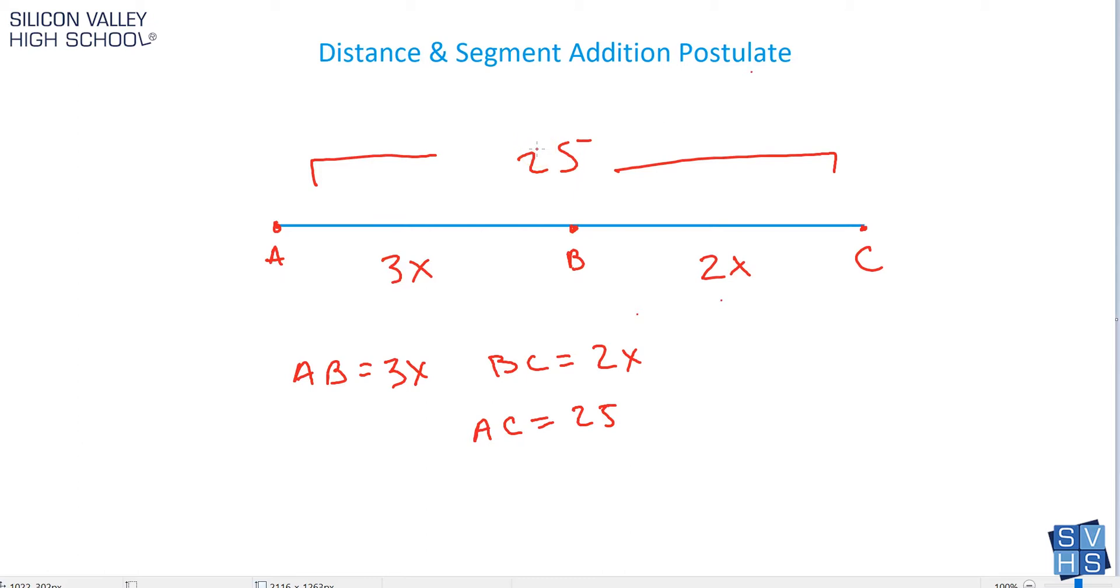Now you know that these two suckers add to this long guy. So all you do is write out your little algebraic equation. I'd get 3X plus this guy 2X equals 25. Looks to me like 5X equals 25, divide by 5, divide by 5, so you'd get X equals 5. And so that one was pretty straightforward.